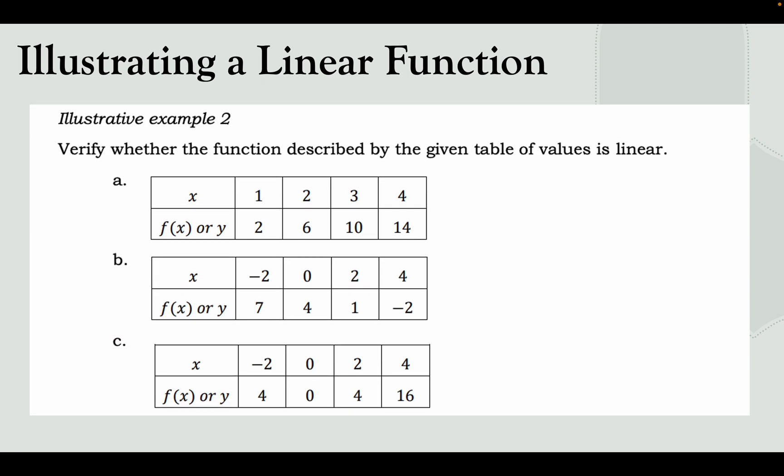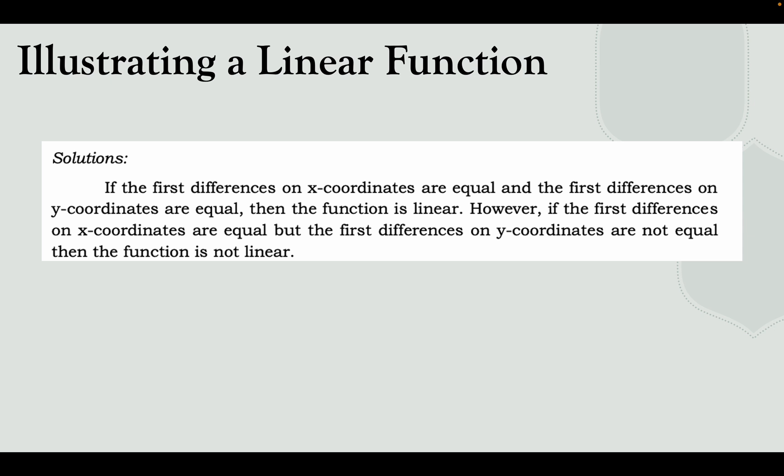Illustrative example 2: let us verify whether the function described by a given table of values is linear. To determine this, check the first differences of the x-coordinates and y-coordinates. If the first differences of the x-coordinates are equal and the first differences of the y-coordinates are also equal, then the function is linear. If the first differences of x are equal but the first differences of y are not, then it is not linear.